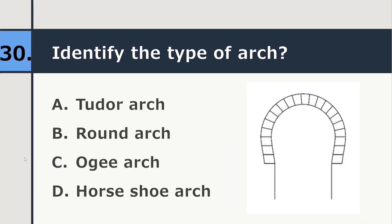Identify the type of arch. Tudor arch, round arch, ogee arch or horseshoe arch. So correct answer is horseshoe arch.